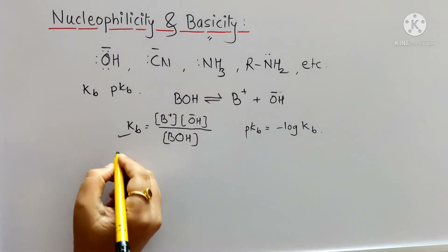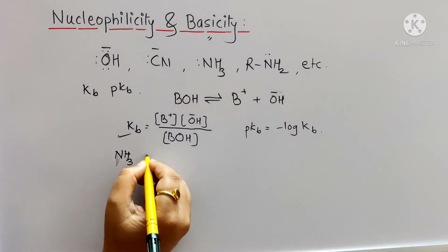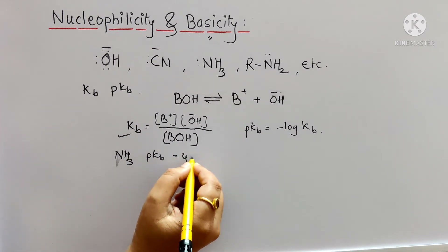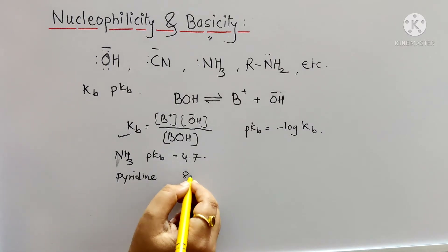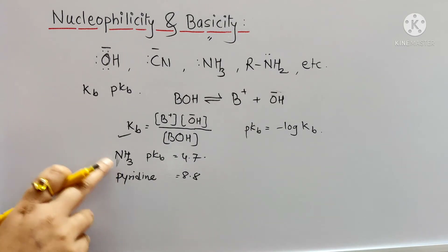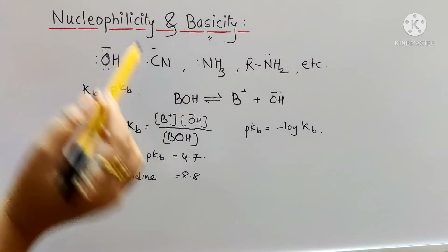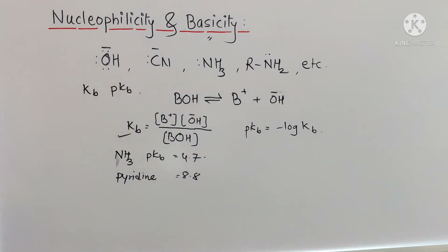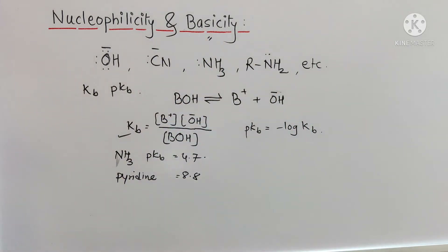For example, NH₃ is having a pKB value of 4.7, and that of pyridine is 8.8. So in this case NH₃ is a stronger base than pyridine because it has the lower value. Basicity indicates the extent to which the base accepts a proton. It is a thermodynamic term and it affects the position of the acid-base equilibrium — if basicity is more, the acid-base equilibrium will shift more towards the right-hand side.